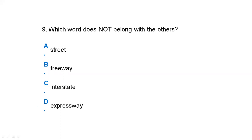Question number 9: four options are given — option A is street, option B is freeway, option C is interstate, and option D is expressway. Clearly, options B, C, and D are in the same category as they are all used for high-speed highways. But street is used only for slow traffic. So the correct answer, which is different from all these classifications, is option A, street.